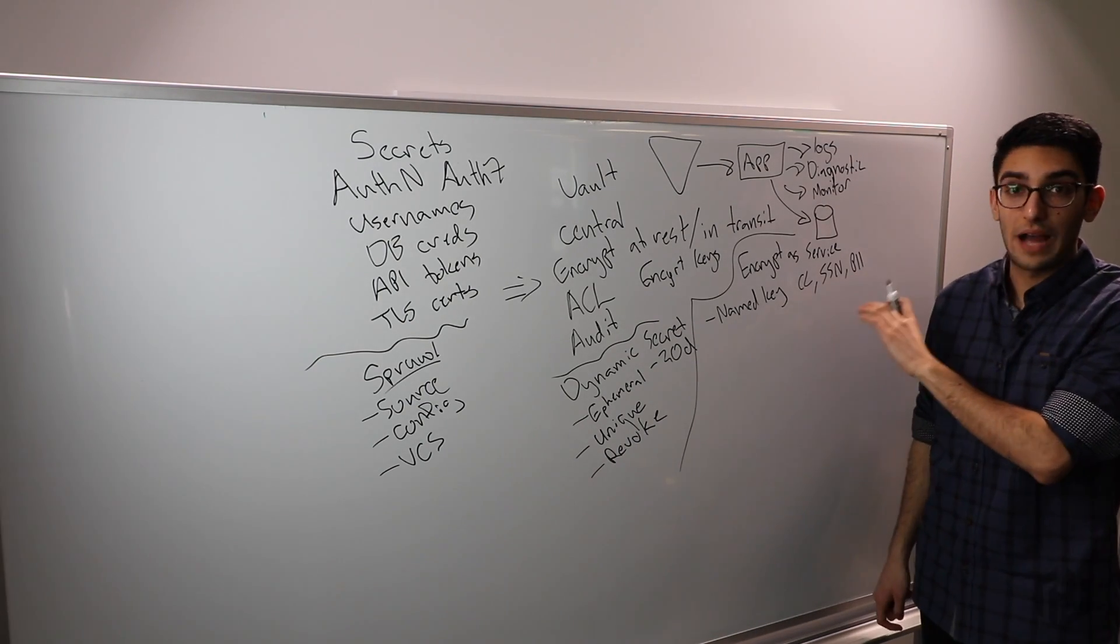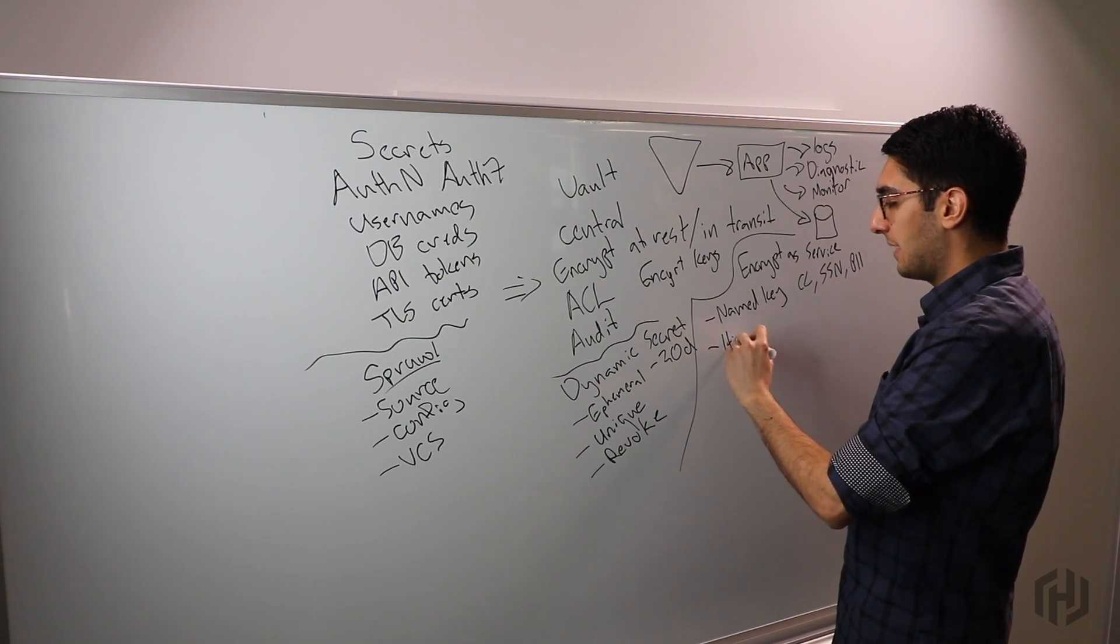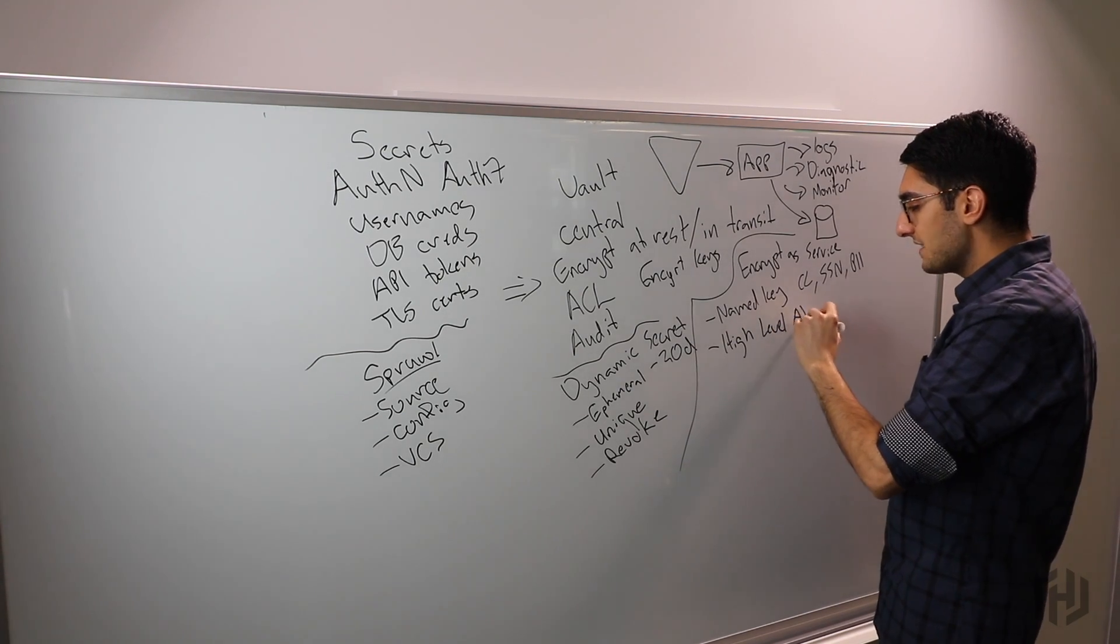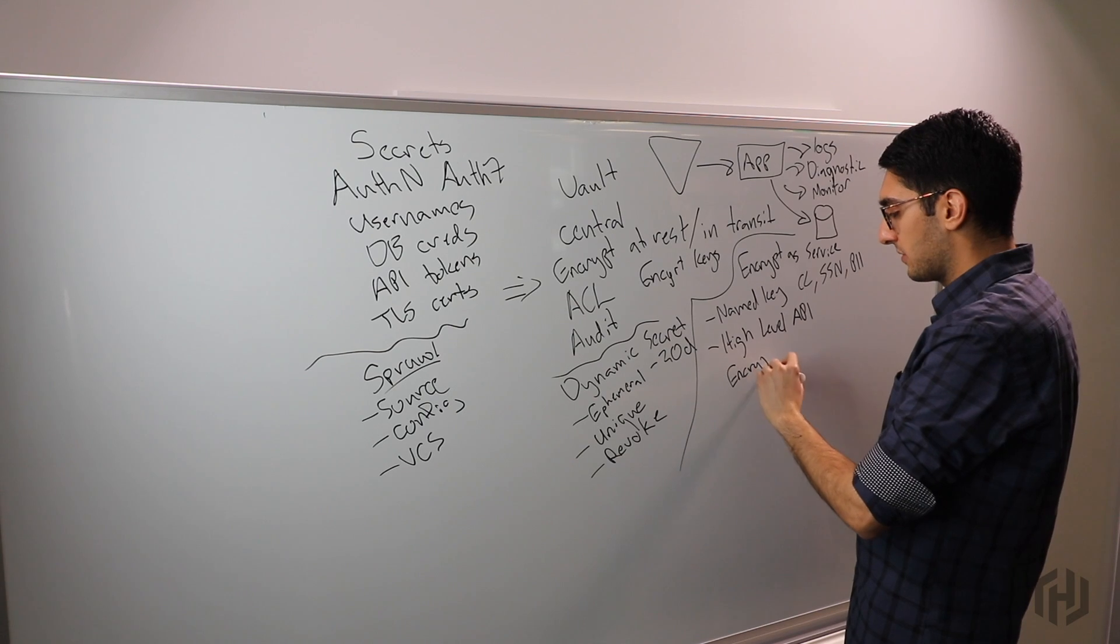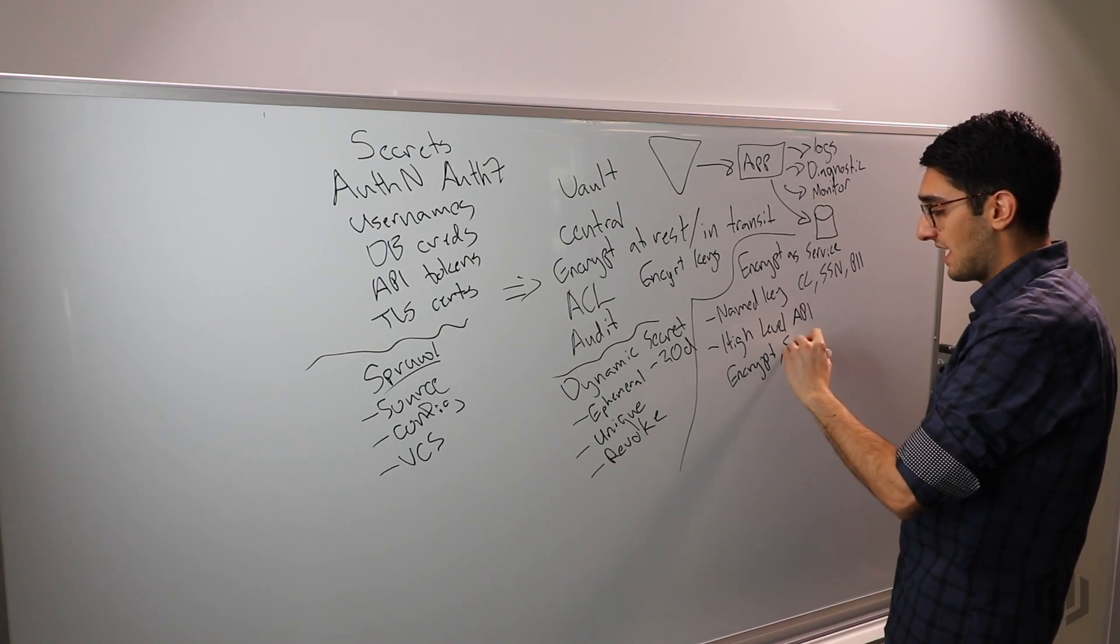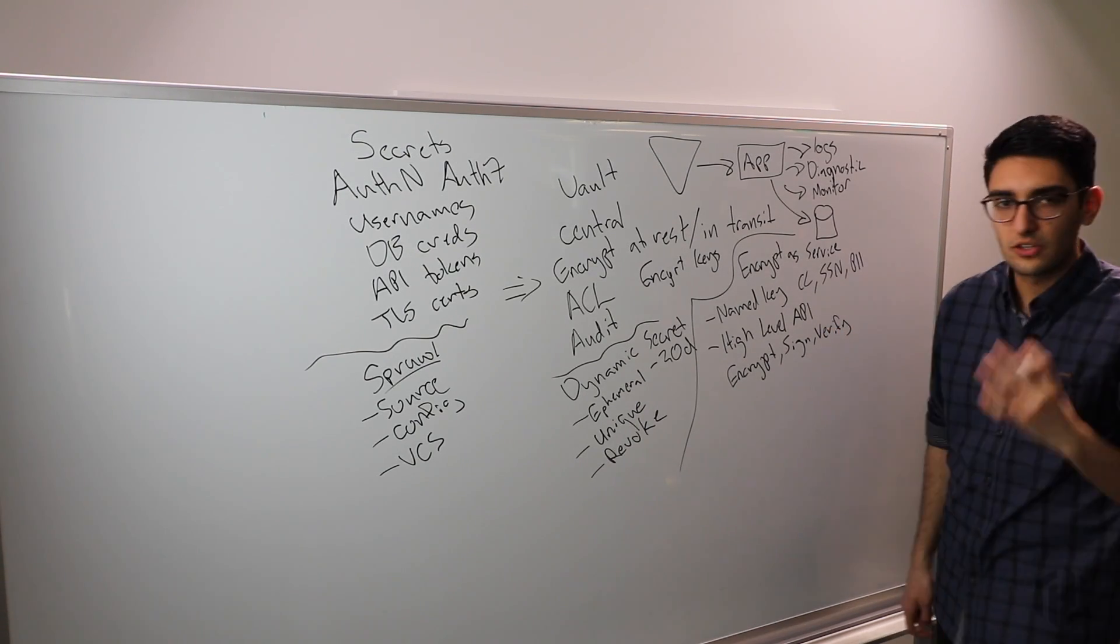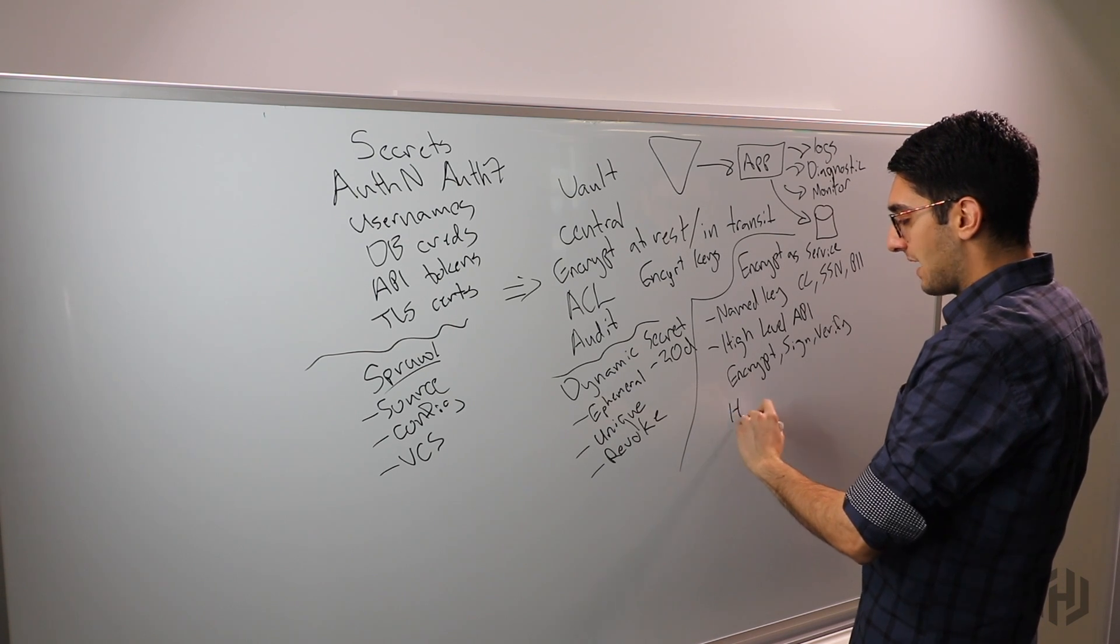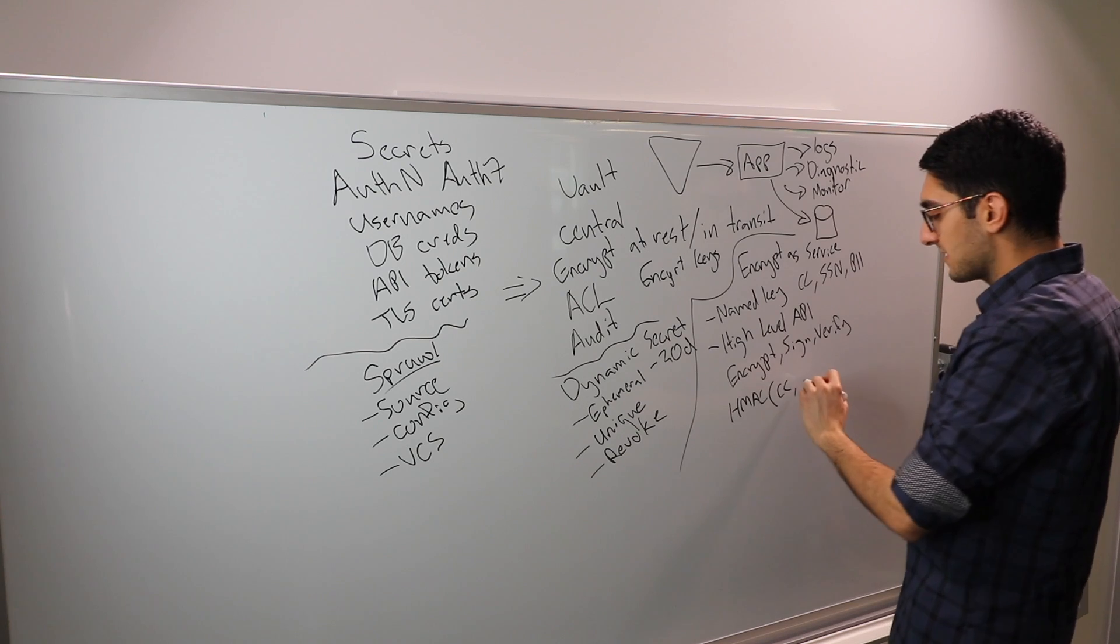What we expose is a set of high-level APIs to do cryptography. These APIs will be the classic operations you expect: things like encrypt, decrypt, sign, or verify. Now as a developer, what I'm really doing is calling Vault with an API and saying I want to do an HMAC using my credit card key and some piece of data.